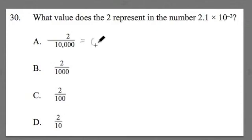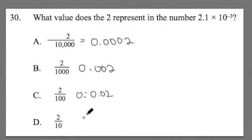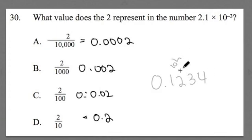These values here, this would be like 2 to the ten thousandths place. This is 2 to the thousandths place. This is 2 to the hundredths place, and this is 2 to the tenths place. All right? So make sure you have those values and those place values. Tenths, hundredths, thousandths, ten thousandths. Okay?